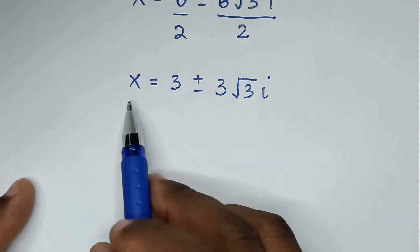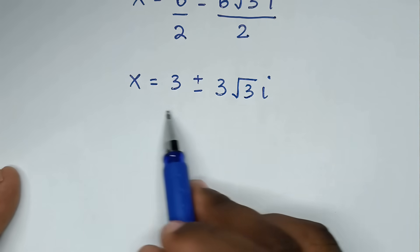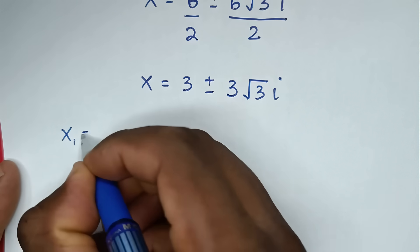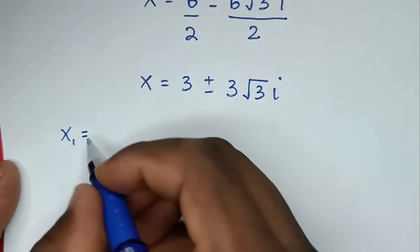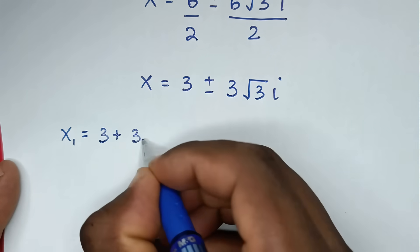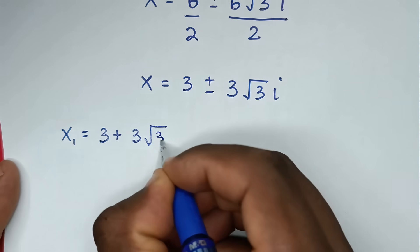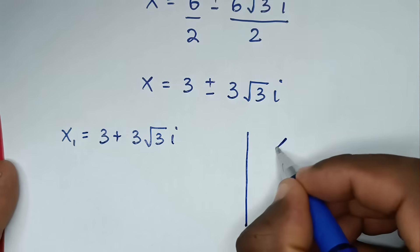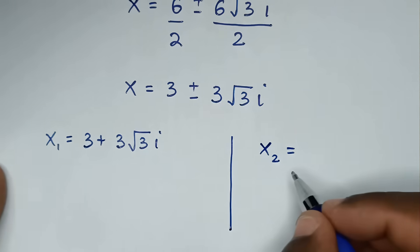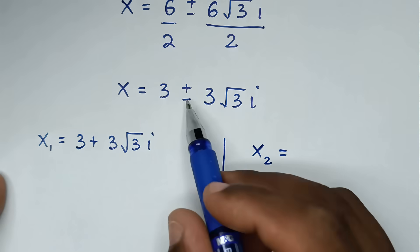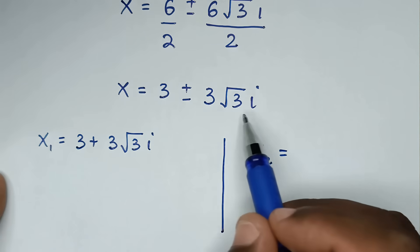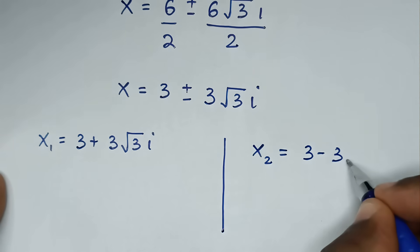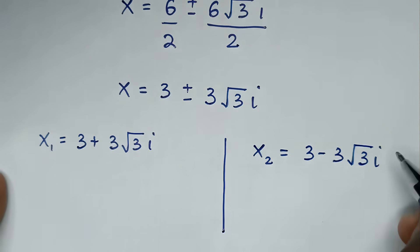So from here we have two values of x. The first solution is x₁ equal to 3 plus 3 square root of 3i. The second value is x₂ equal to 3 minus 3 square root of 3i.